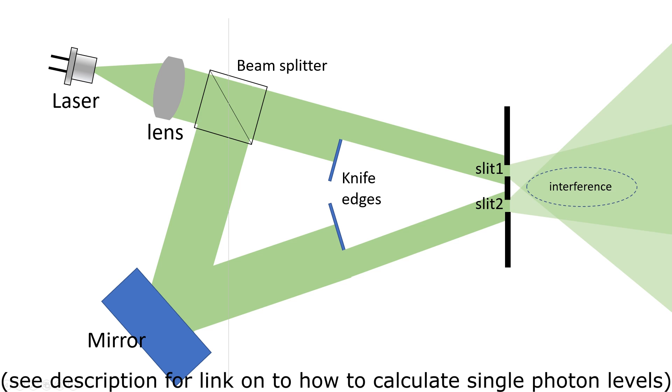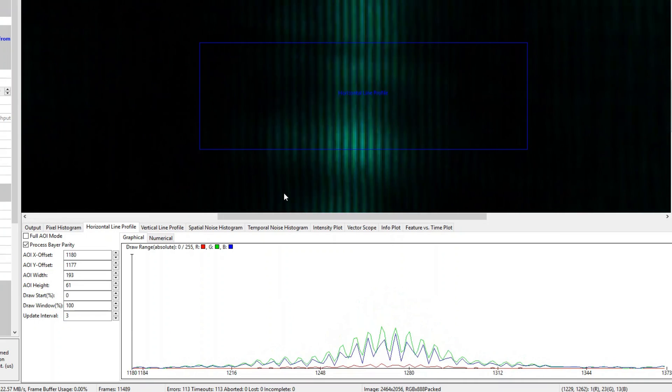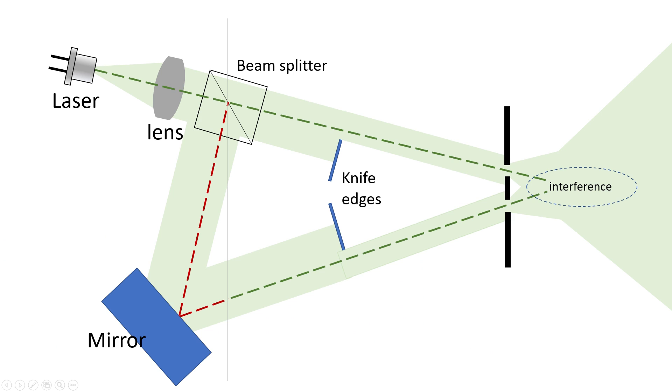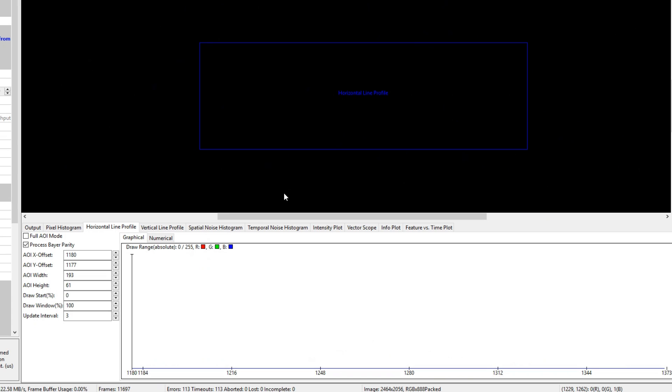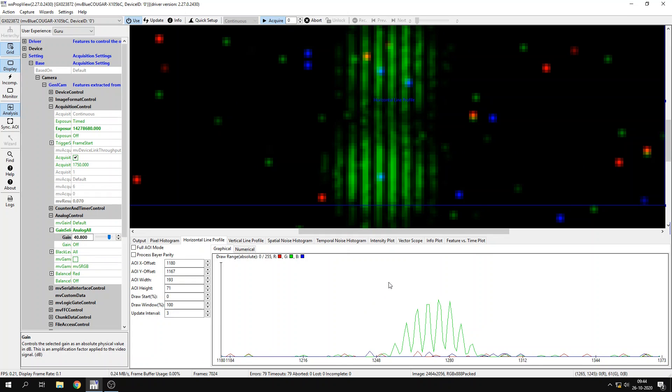I just reduced the intensity of the beam by 6 or 7 orders of magnitude, first by lowering the laser intensity and then by adding gray filters to the beam. Now, in order to see any signal in this case, I also needed to crank up the gain level of the sensor to about 50 times the normal level.